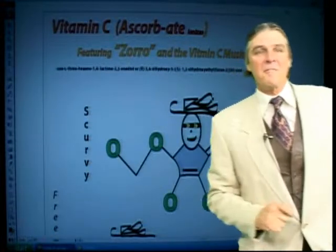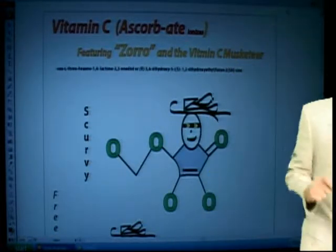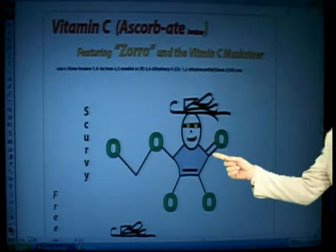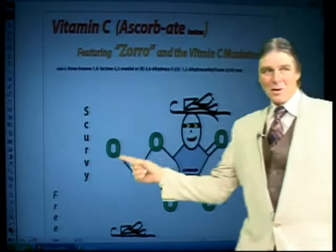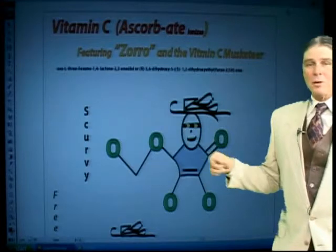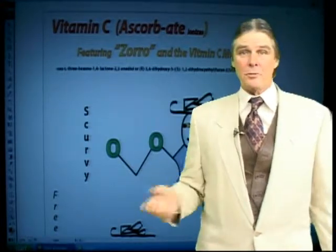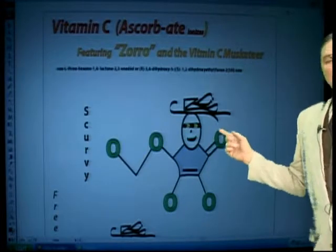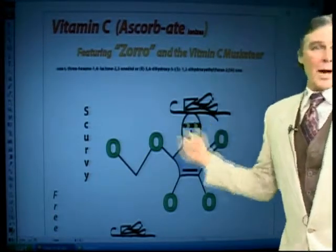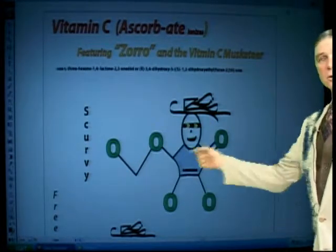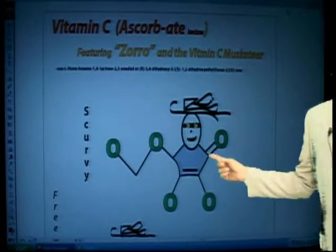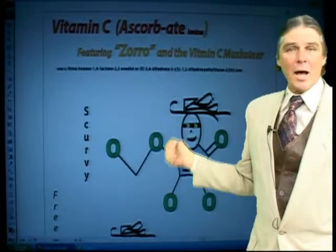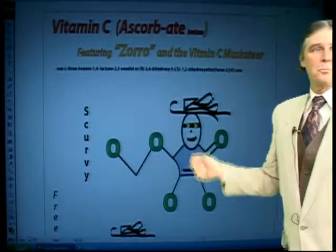We're going to look at some new designs in vitamins. This is vitamin C. If you notice, we have some oxygens. We know that vitamin C — ascorbate — because it's ionized in an aqueous solution like your blood, is a free radical scavenger. So how does it do that? When you've got oxygens that are double-bound, you've got them in ethers — these will absorb free radical electrons and neutralize them.